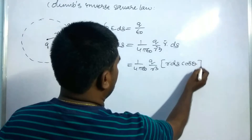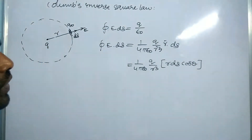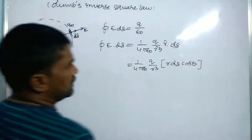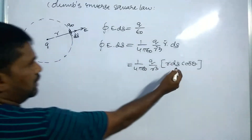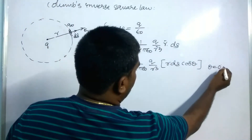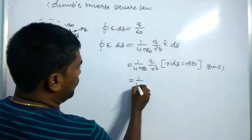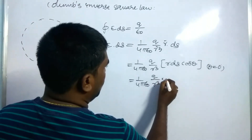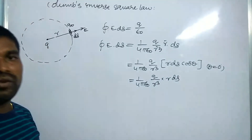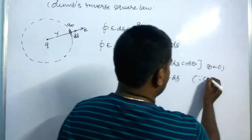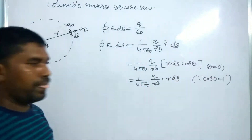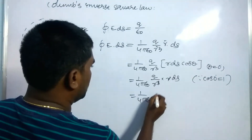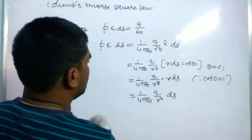This equals R·dS·cosθ, since A·B = AB cosθ. Here the angle between E and dS, and also between R⃗ and dS⃗, is θ = 0°, so cos0° = 1. Hence we can write (1/4πε₀) × Q/R³ × R·dS, and since R·dS/R³ = dS/R², this simplifies to (1/4πε₀) × Q/R² × dS.